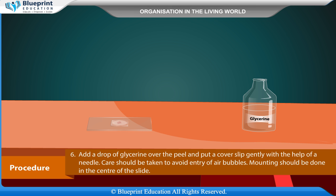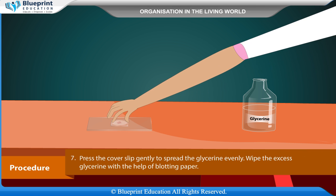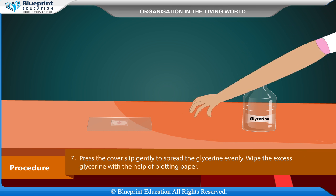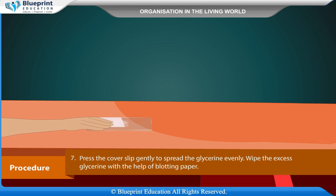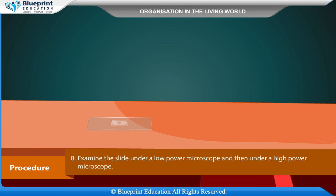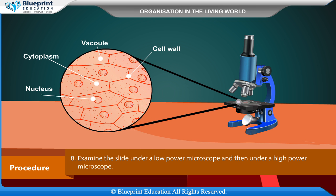Mounting should be done in the center of the slide. Press the cover slip gently to spread the glycerine evenly. Wipe the excess glycerine with blotting paper. Examine the slide under a low power microscope and then under a high power microscope.